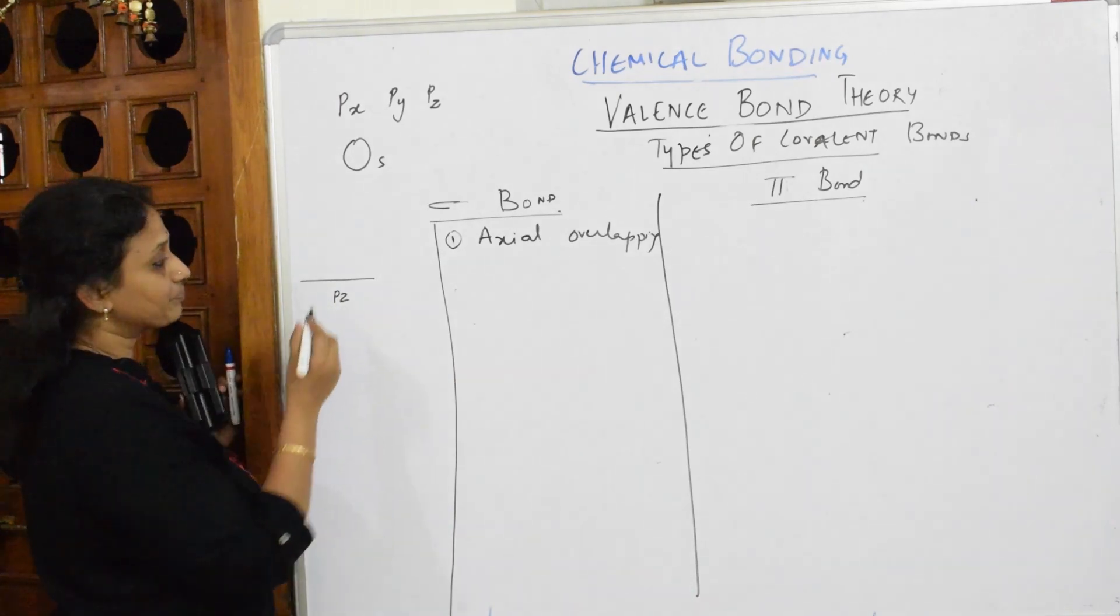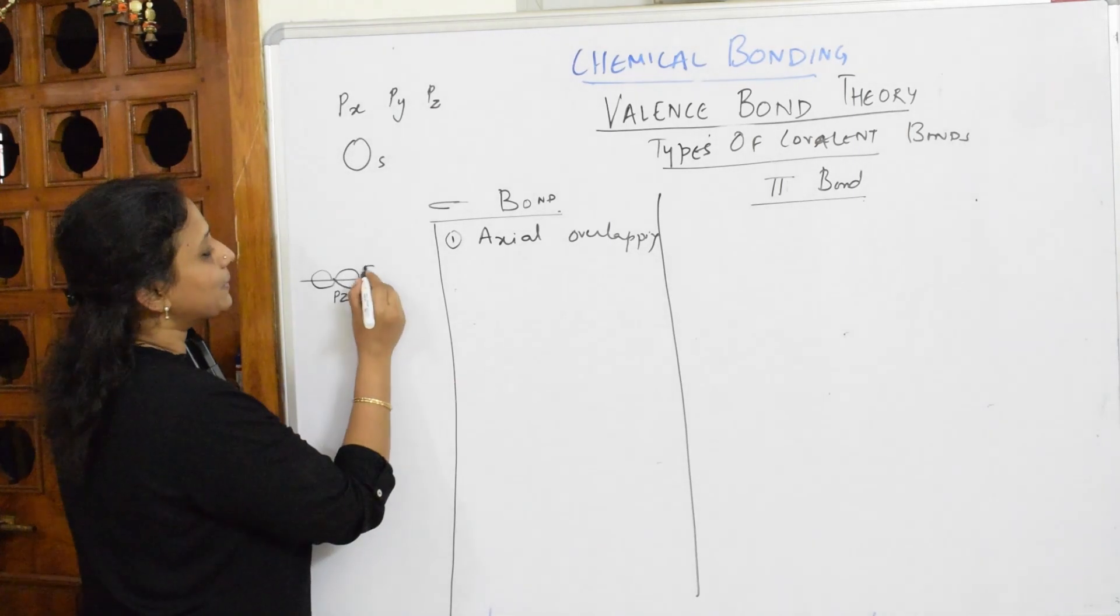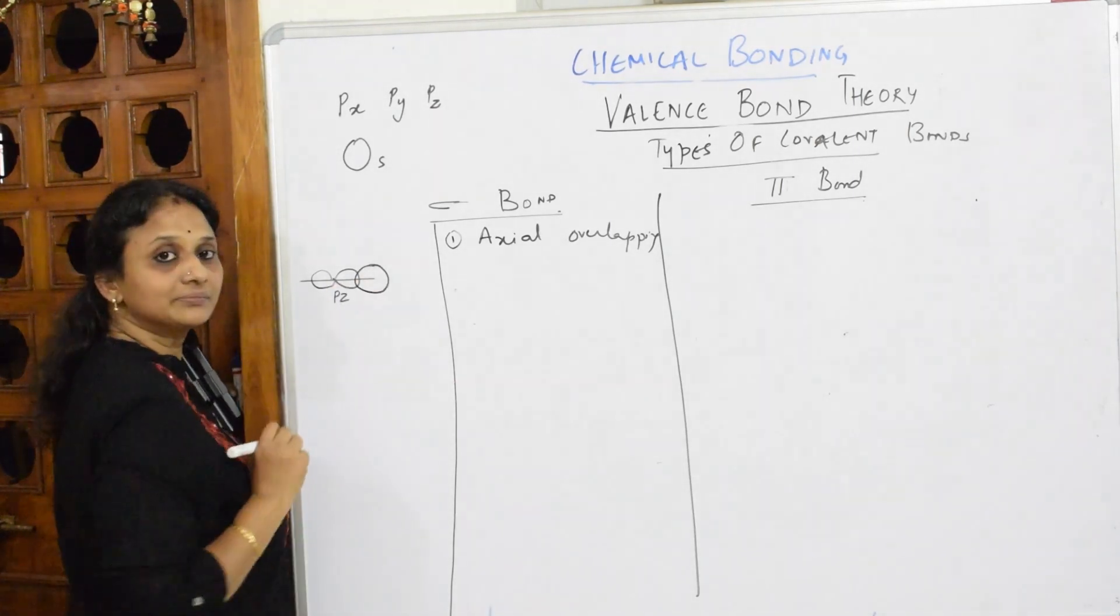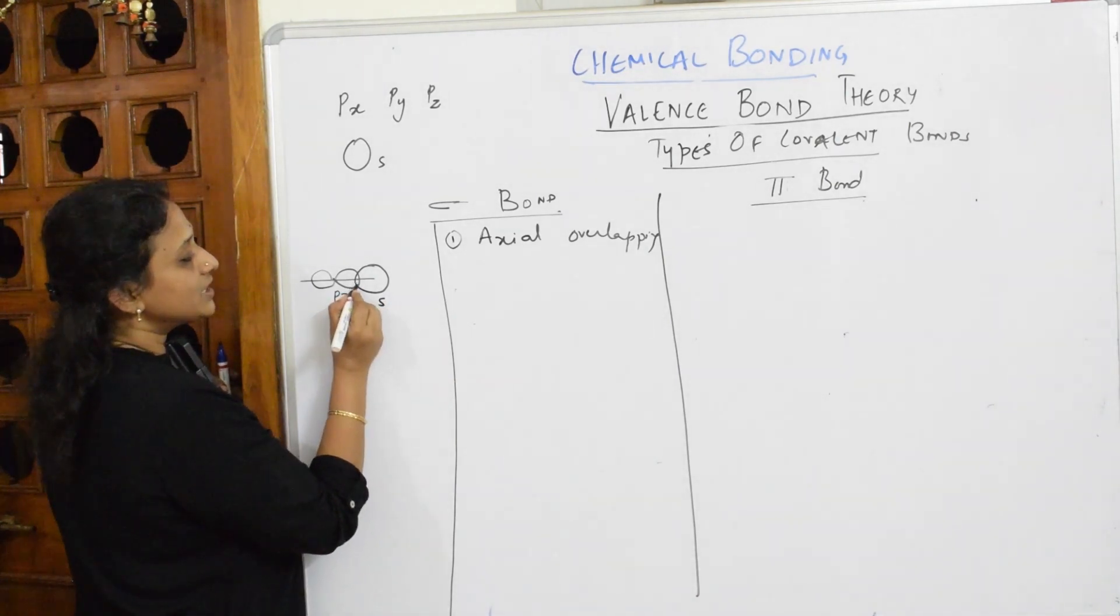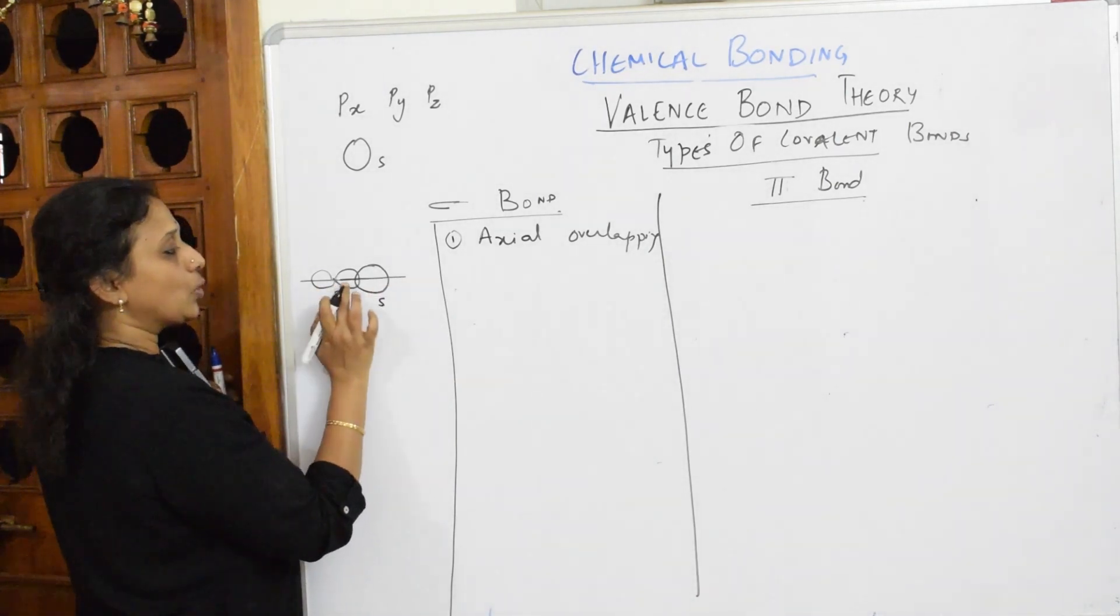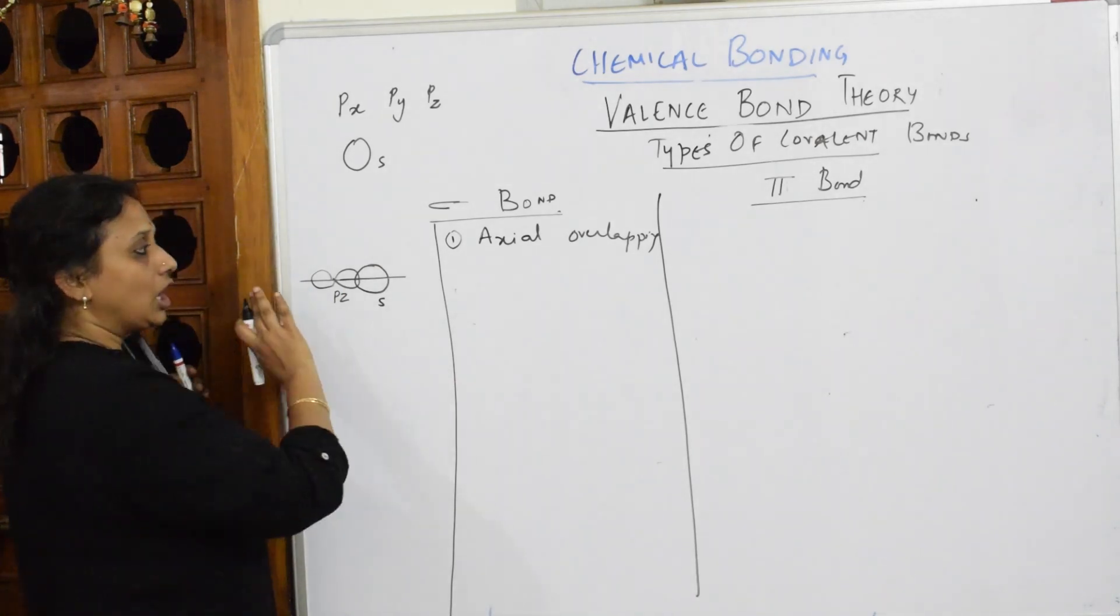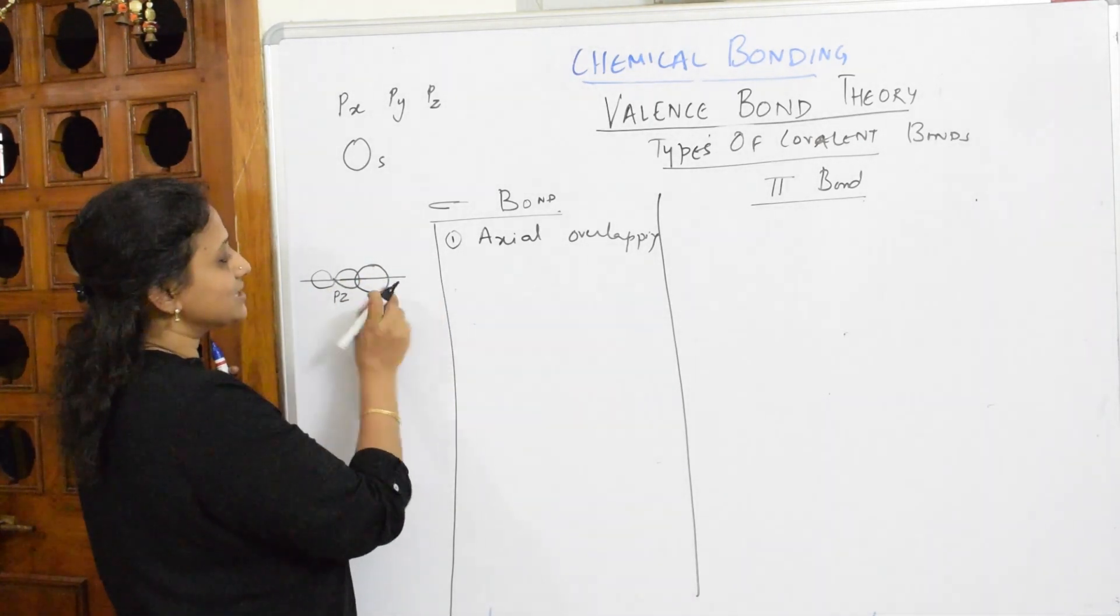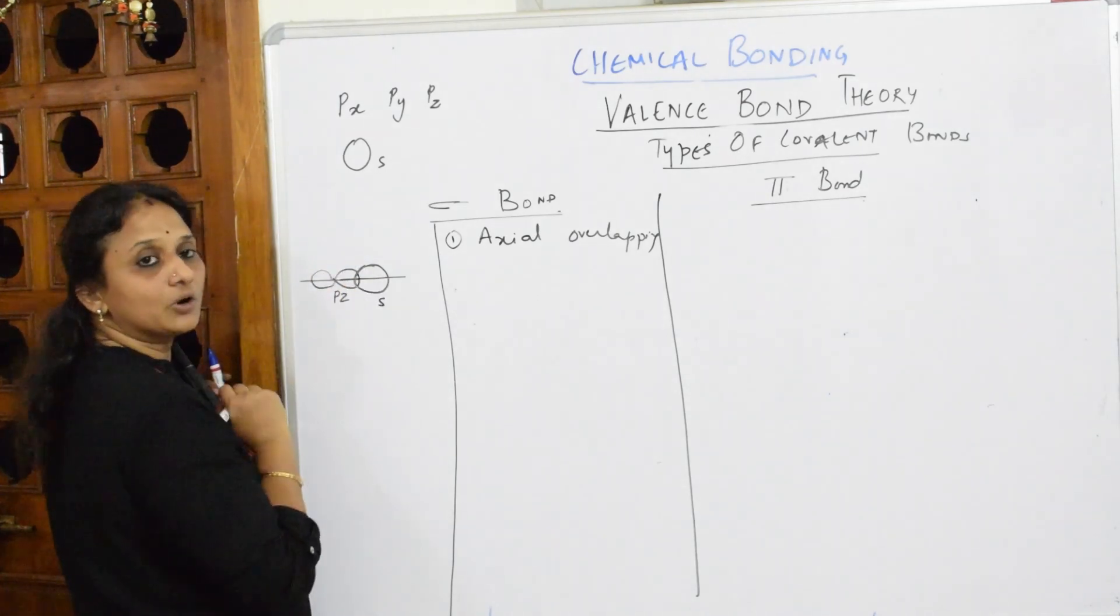I'm going to pick a pz orbital, dumbbell shape. I'm going to overlap this with s. Are you not finding they are overlapping along the axis? This is called axial overlapping. It means along this particular axis they are overlapping and forming a bond called sigma bond.